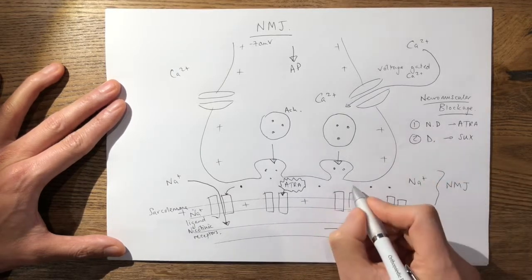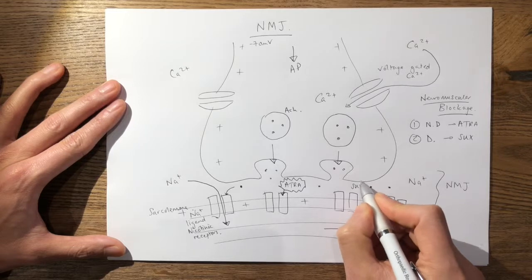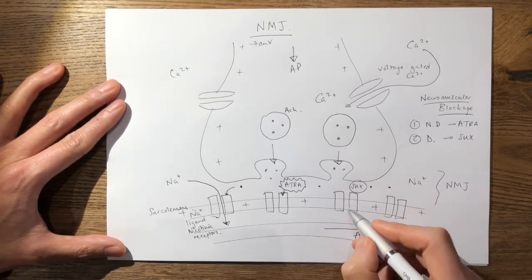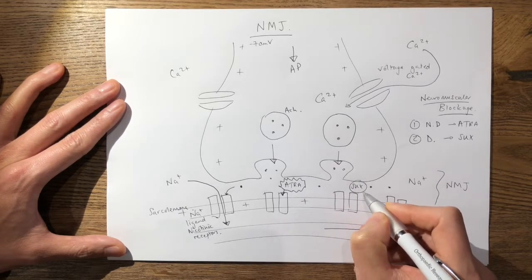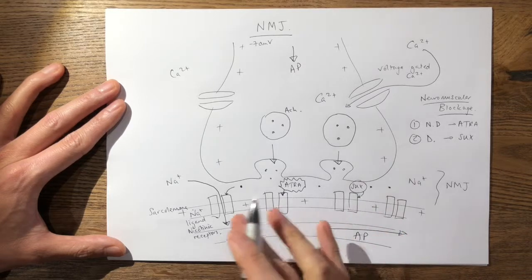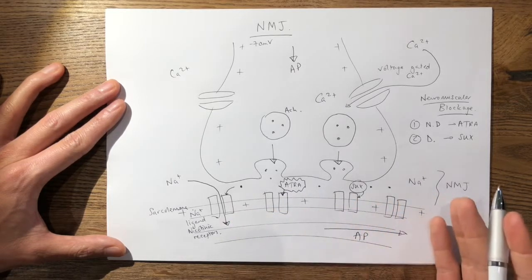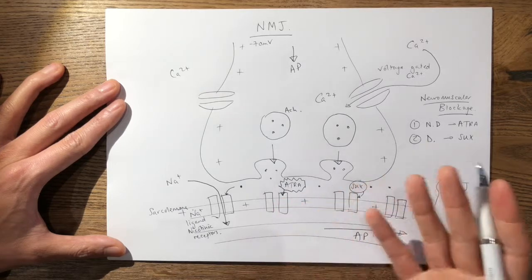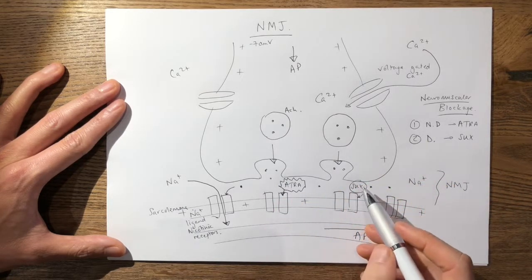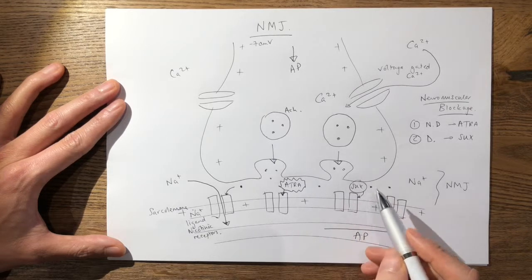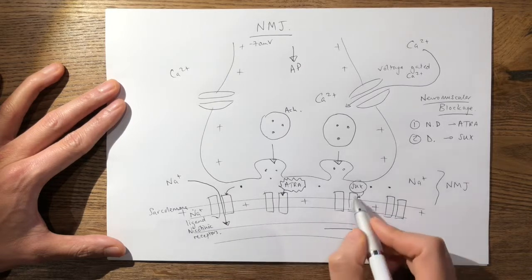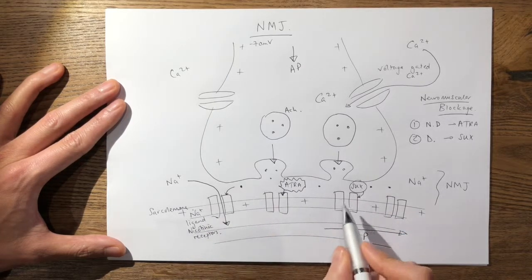However, suxamethonium works slightly differently because this is a depolarizing neuromuscular blockade. What happens is that similarly it binds onto these receptors, however it does cause an initial depolarization phase where you get an initial muscle contraction or muscle fasciculation. However, because the suxamethonium takes much longer to degrade, it then desensitizes and just sits in these receptors preventing binding of your normal acetylcholine.